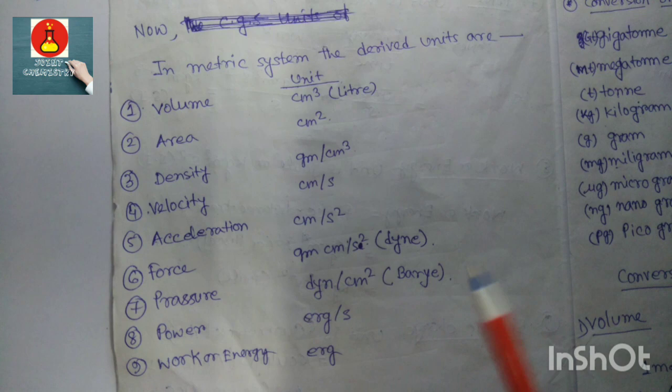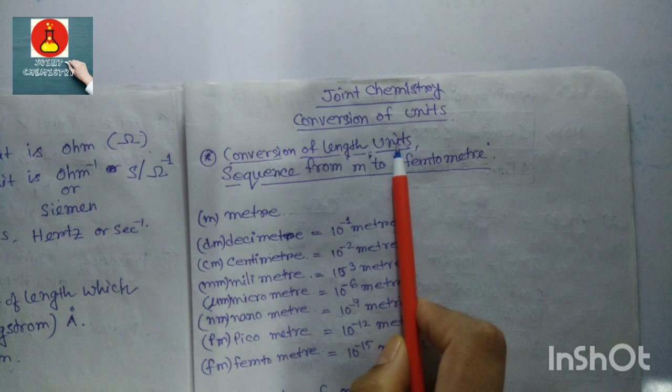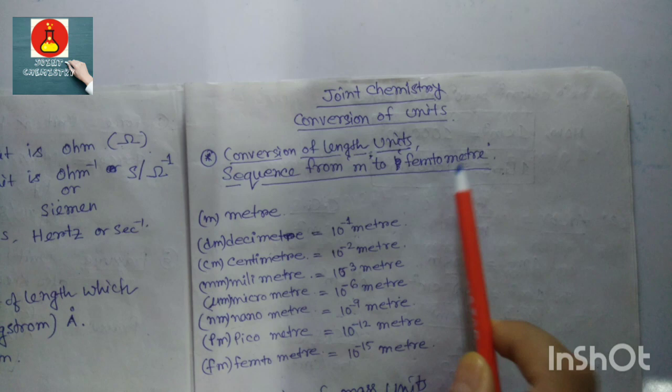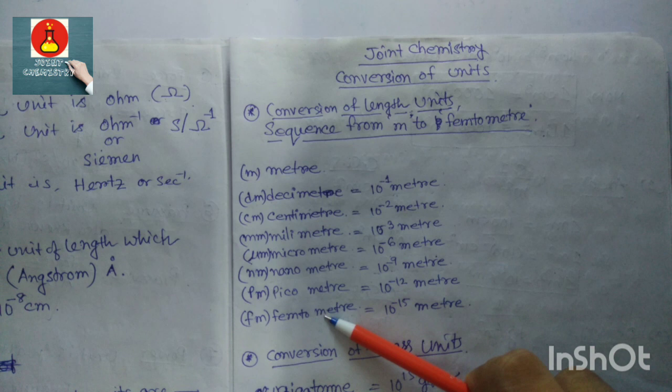Now we will do some conversions of units. First, conversion of length units — we need to know the sequence from meter to femtometer: meter, decimeter, centimeter, millimeter, micrometer, nanometer, picometer, and then femtometer.